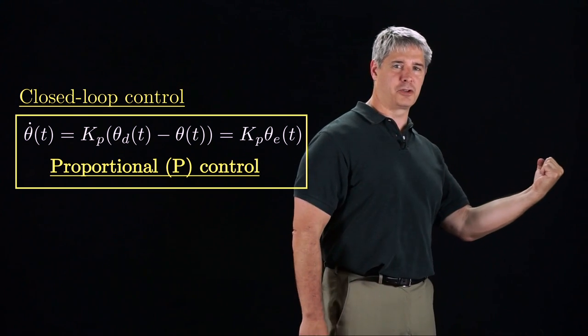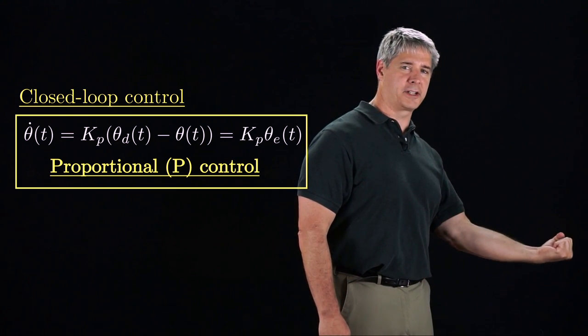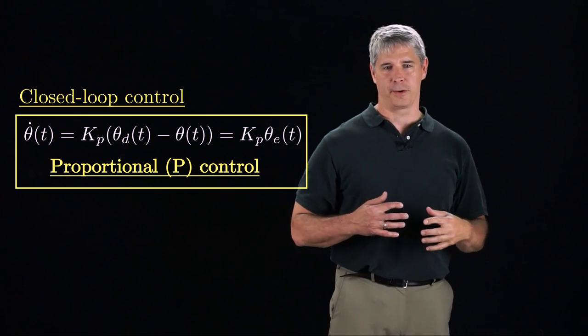If the gain kp were negative, the joint would move away from the goal configuration with increasing velocity the further it is from the goal.